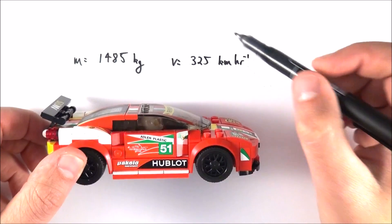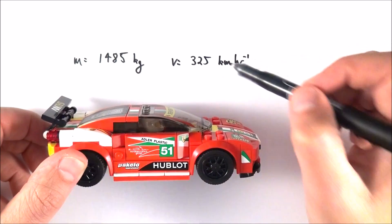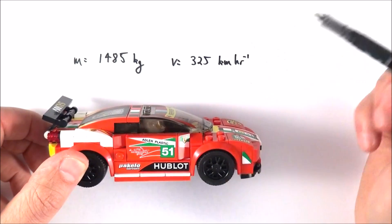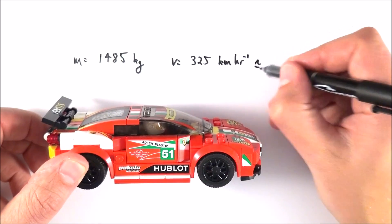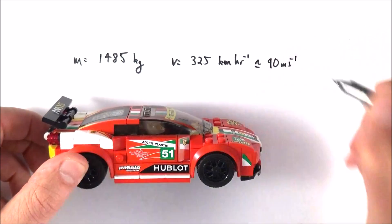325 kilometers per hour, we multiply it by a thousand to get it into meters per hour and then divide by 3600 which is approximately equal to 90 meters per second.